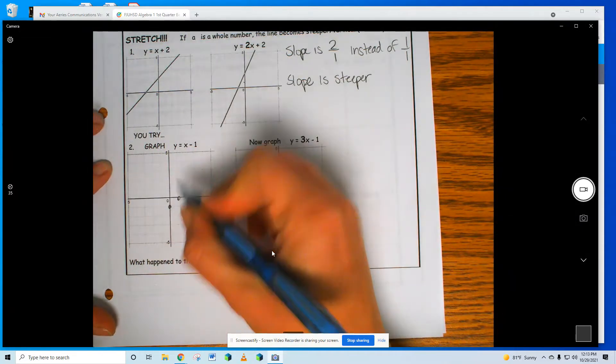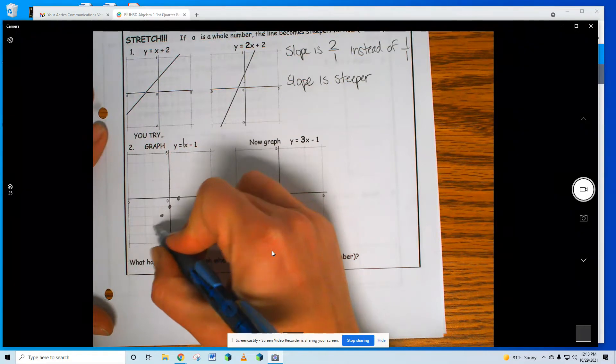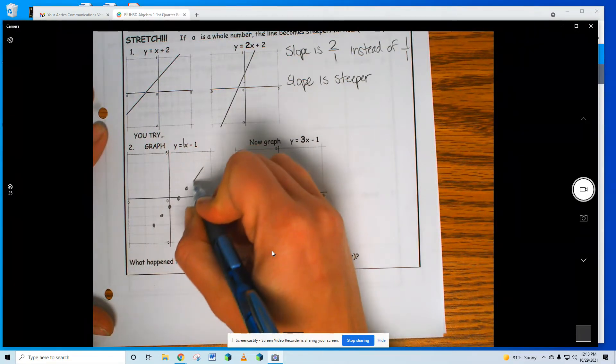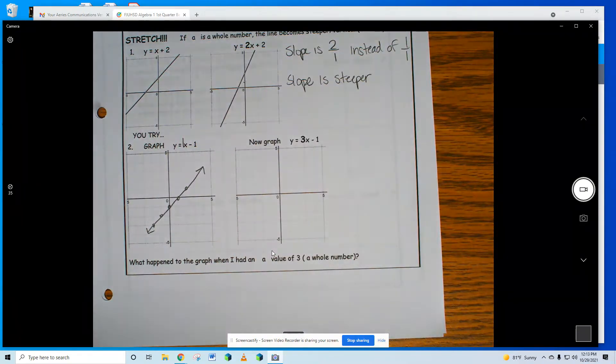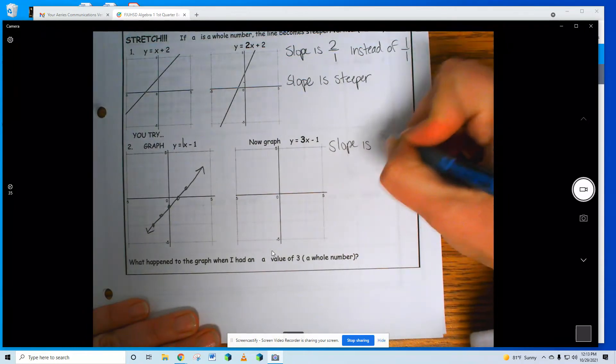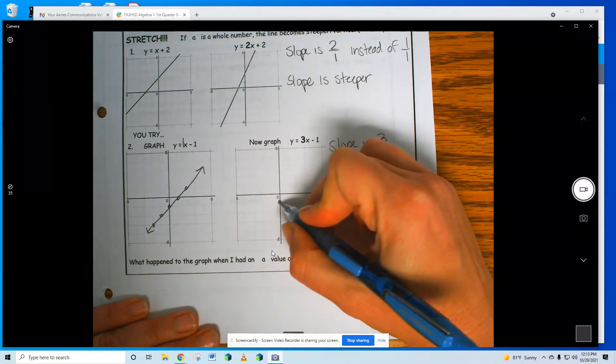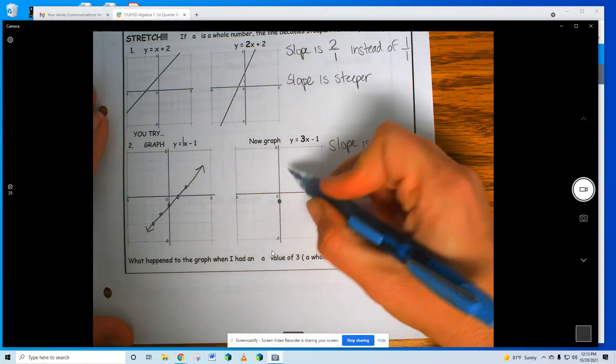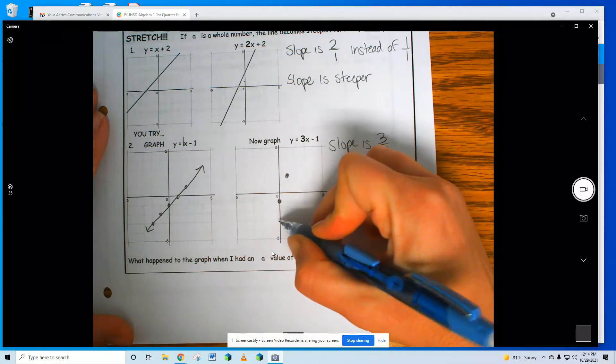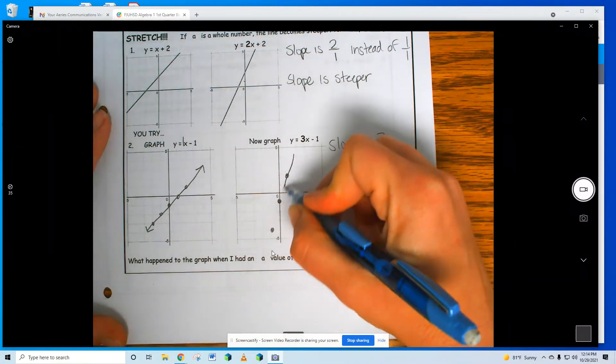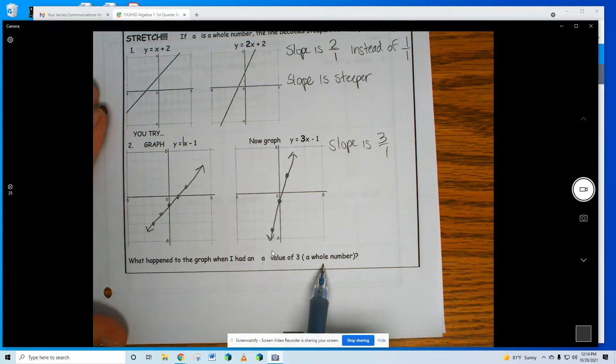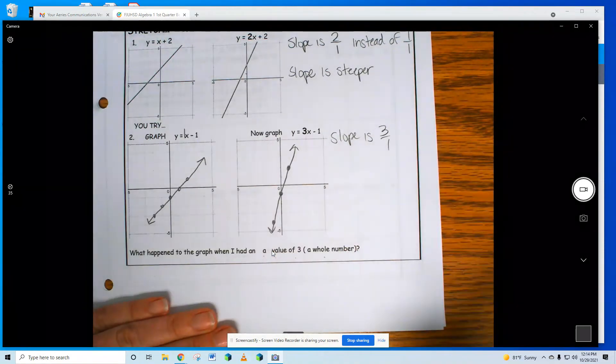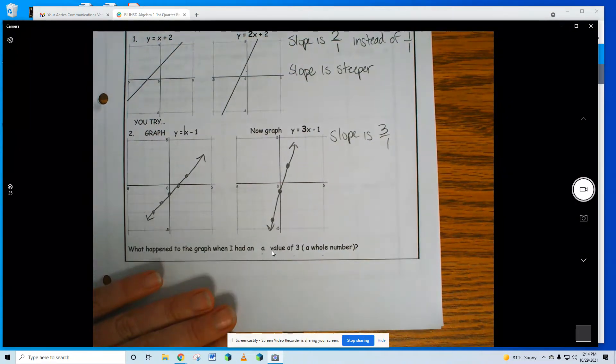Did you do number 2? Rise 1, run 1, my slope is 1. Reverse it: down 1, left 1, down 1, left 1. Then I can do my next one. My slope is 3 over 1. Begin at negative 1, rise 3—1, 2, 3—run 1. Down 3, left 1. What happened to the graph when I had an a value of 3?